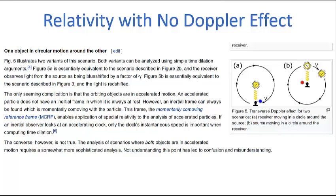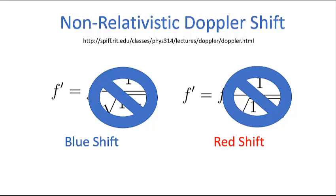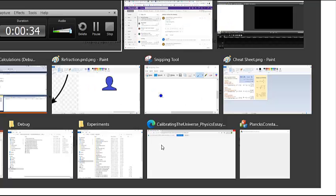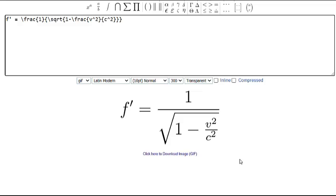Today we're going to continue our discourse on relativity. This is a big subject and since I'm on a bit of a roll, I thought I would just keep it going. But I just wanted to remind you — in the last video, I made a mistake. I put a square root in the non-relativistic Doppler shift when there should not be a square root. I'm going to show you how that happened, and also teach you a little bit about LaTeX at the same time.